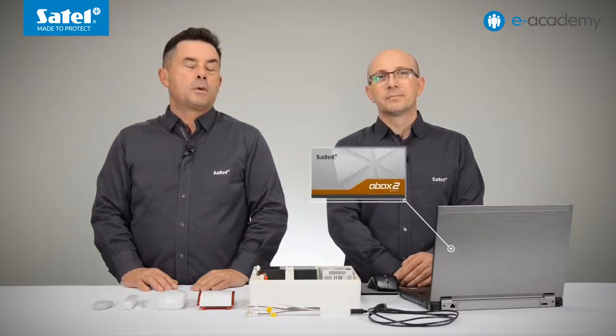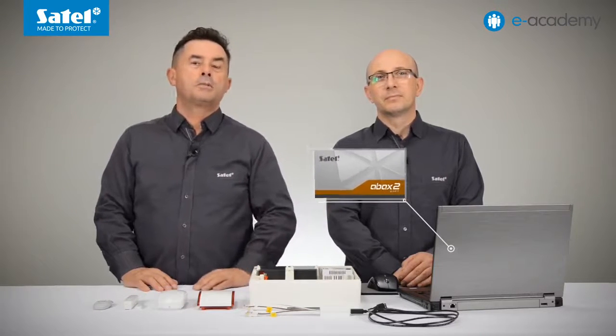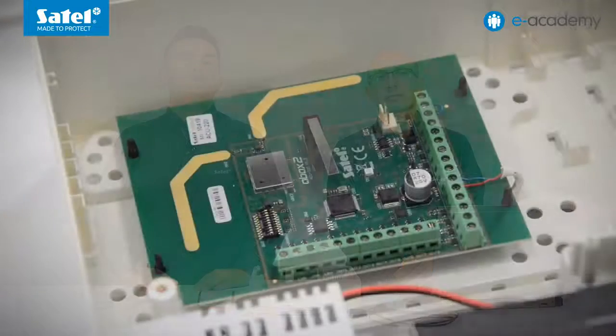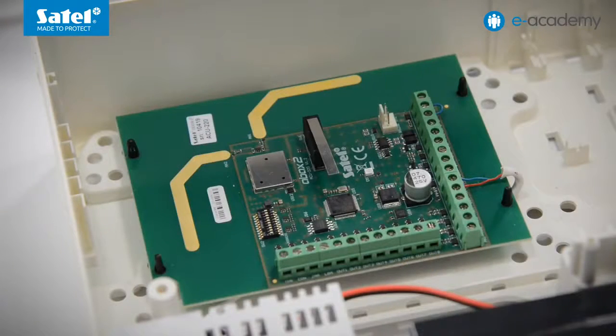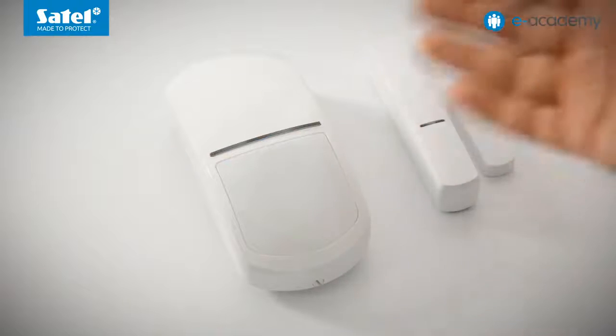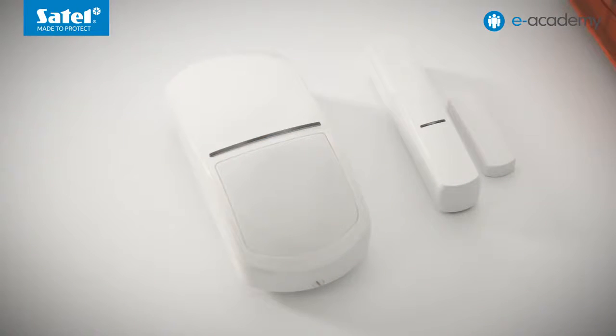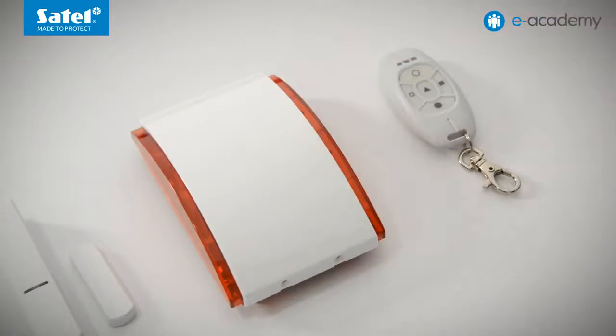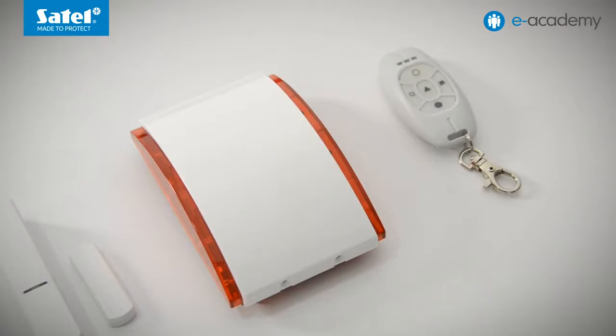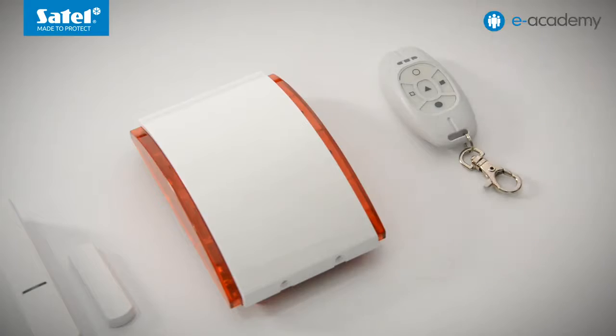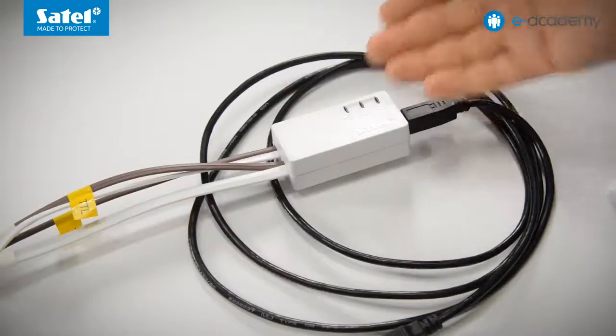What do we need for that? A computer with Windows operating system and the ABAX2 soft program, an ACU220 controller with backup power supply and battery, an APD200 motion detector, an AXD200 universal detector, an ASP215 indoor siren, an APT200 key fob, and a USB RS converter.